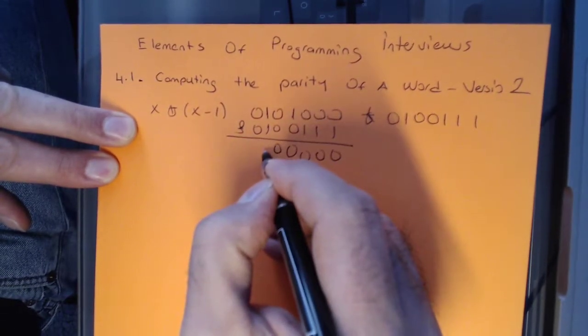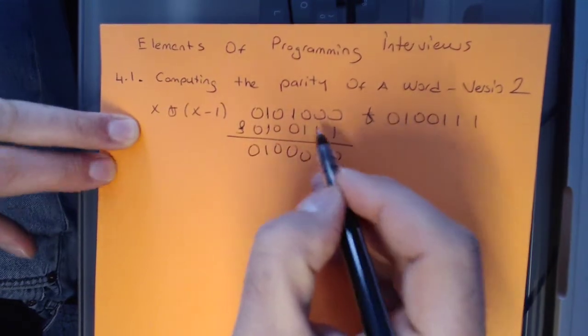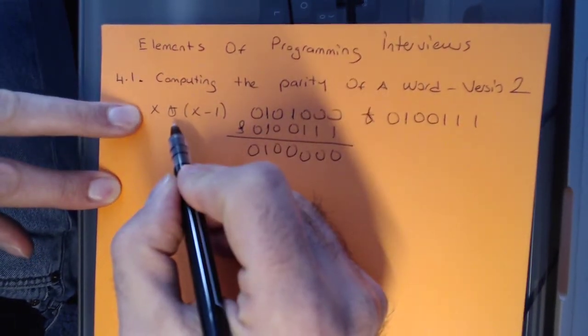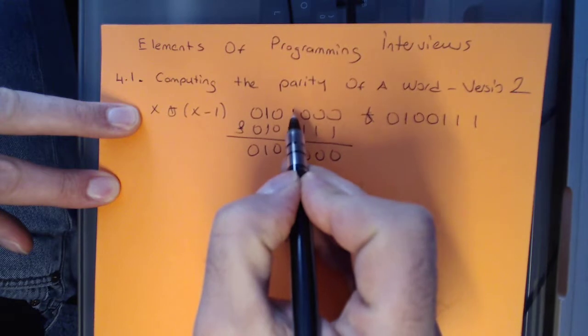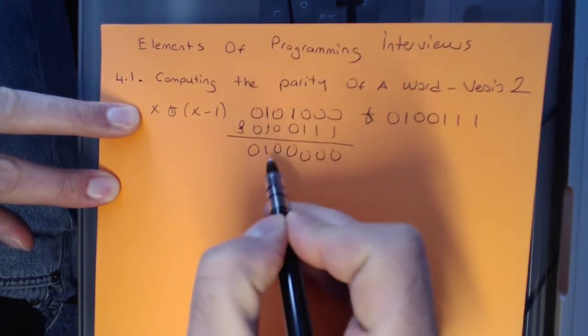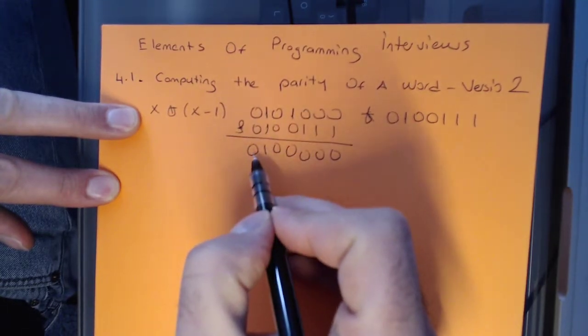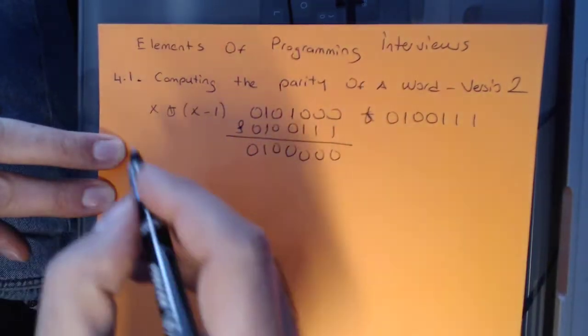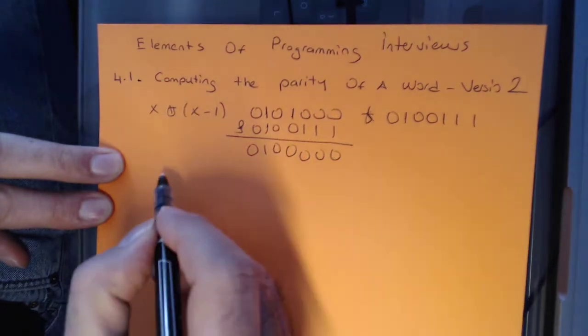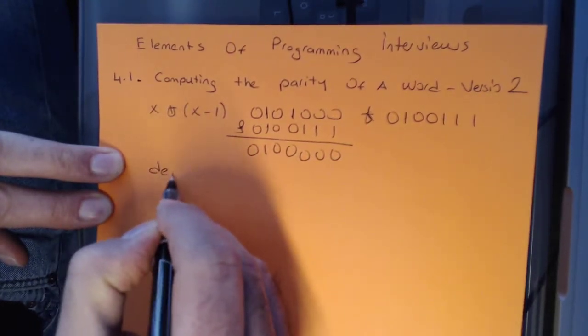So when we apply this bit filling trick, what happens is the lowest set bit which was one here gets unset, so you end up with basically the remaining ones. If there was another one here, we would have carried that over too. So the solution is basically relying on this particular bit filling trick.